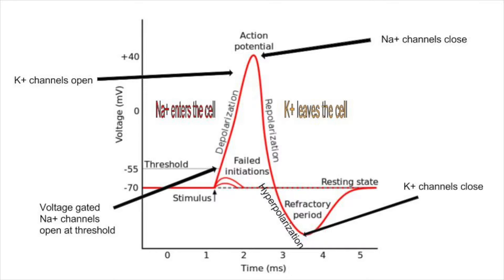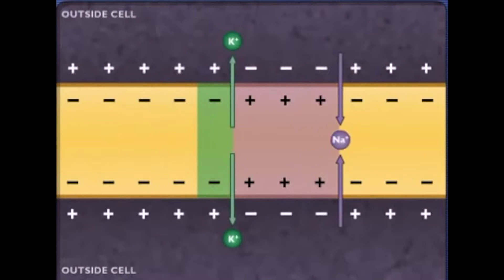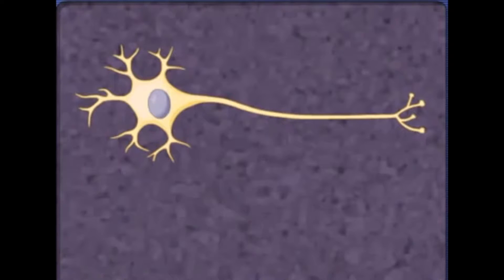During this time, another action potential cannot be sent unless the stimulus is very large. Surrounding cells become depolarized as the nerve impulse travels along the axon. Remember that a myelinated axon will conduct the signal much faster than an unmyelinated one.